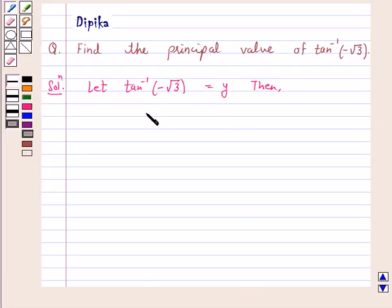Then tan y equals minus root 3. Now this equals minus tan pi by 3. And we know that tan of minus theta equals minus tan theta, so this is tan of minus pi by 3.